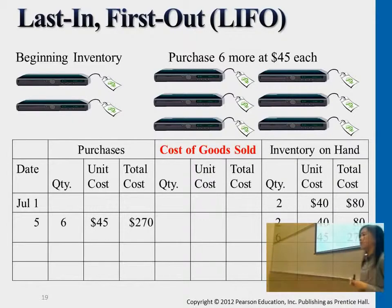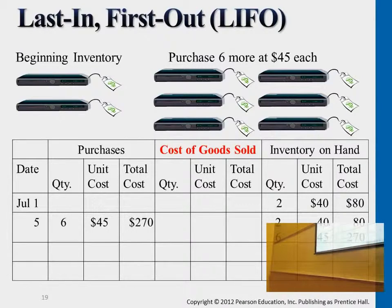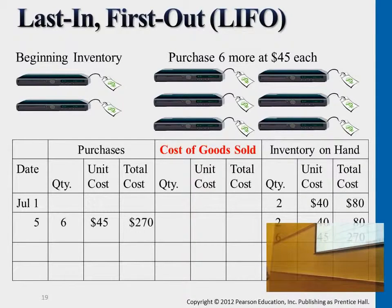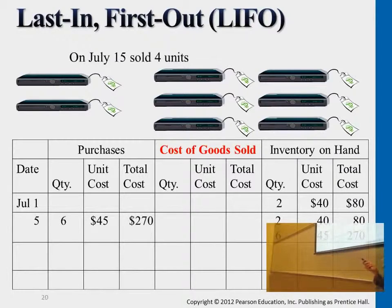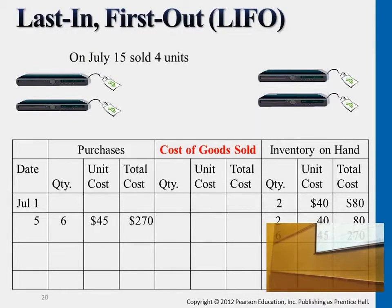FIFO and LIFO inventory costing methods come into play when we start to sell products to customers. So when we are selling four DVD sets in the next transaction, we will sell the $45 ones first. We will be choosing four DVD sets from the latest batch to assign the cost based on $45. In the middle column you will see four times $45, which equals $180.